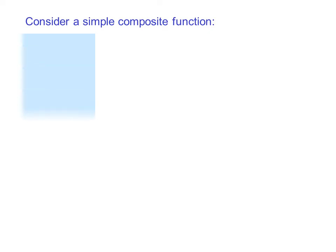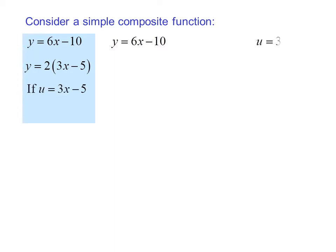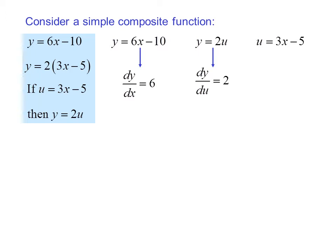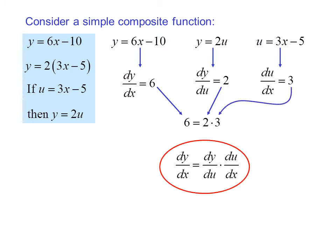Consider a simple composite function: y equals 6x minus 10, which could be written as y equals 2 times (3x minus 5). If we let u equal 3x minus 5, then y equals 2u. dy/dx equals 6, dy/du equals 2, and du/dx equals 3. We notice something interesting: 6 equals 2 times 3, so dy/dx equals dy/du times du/dx.